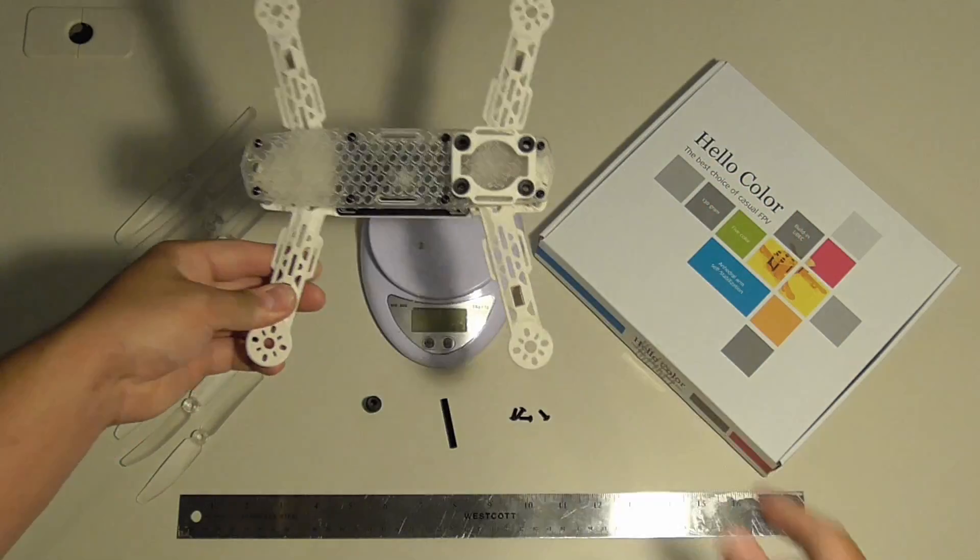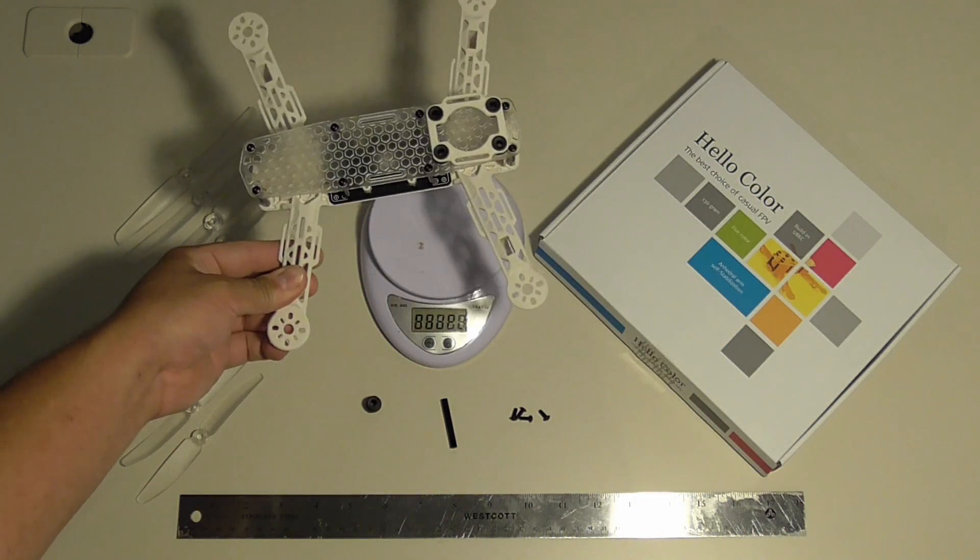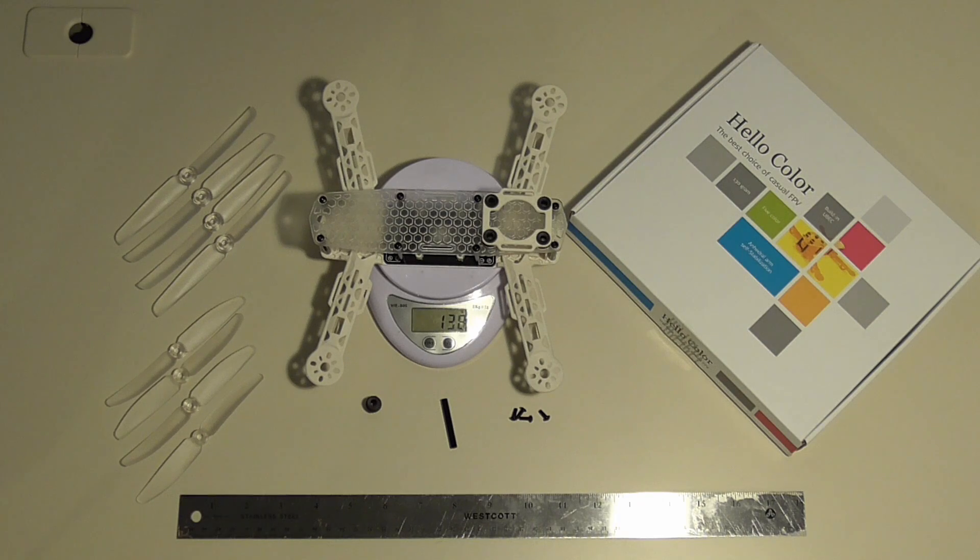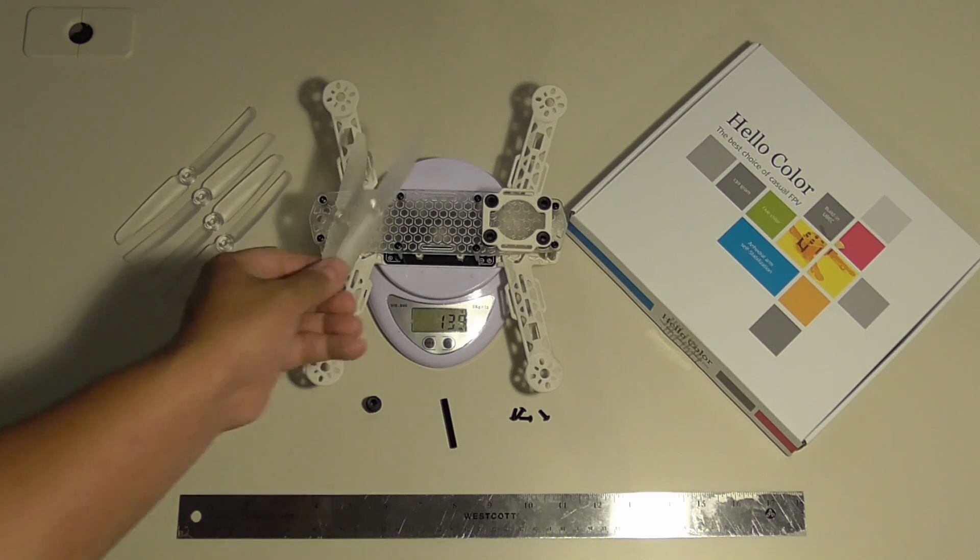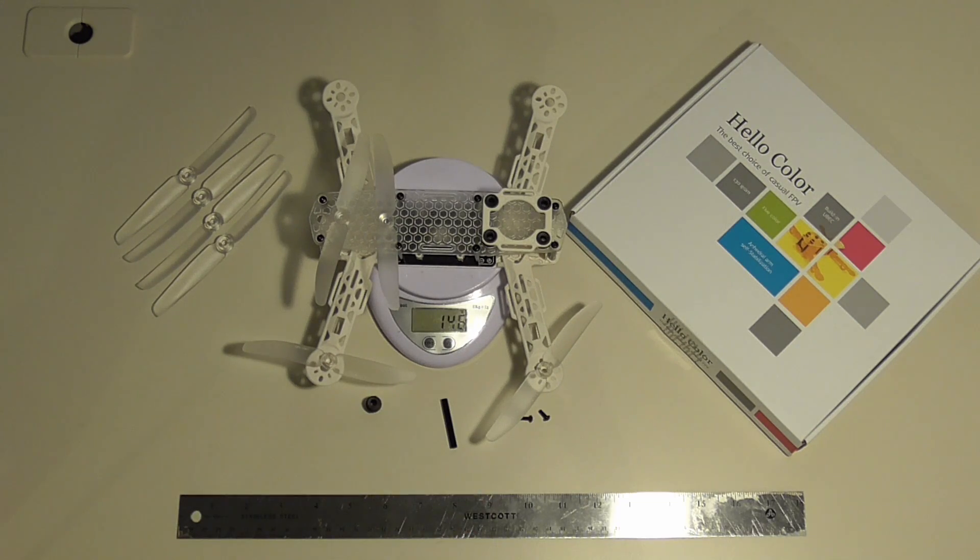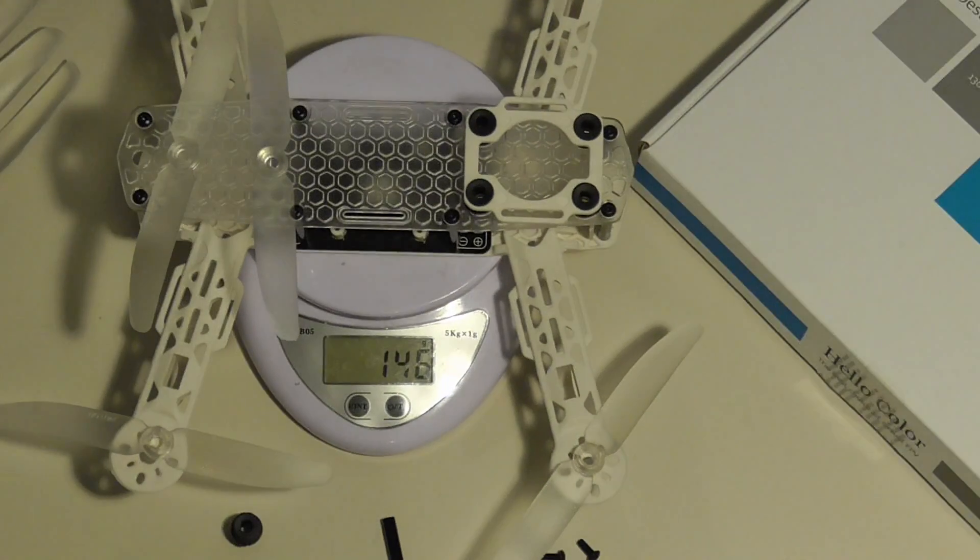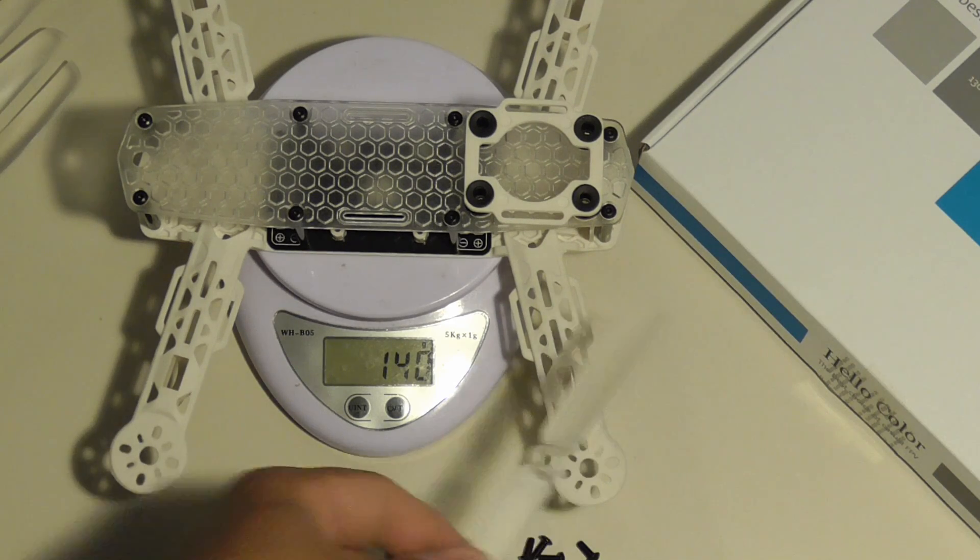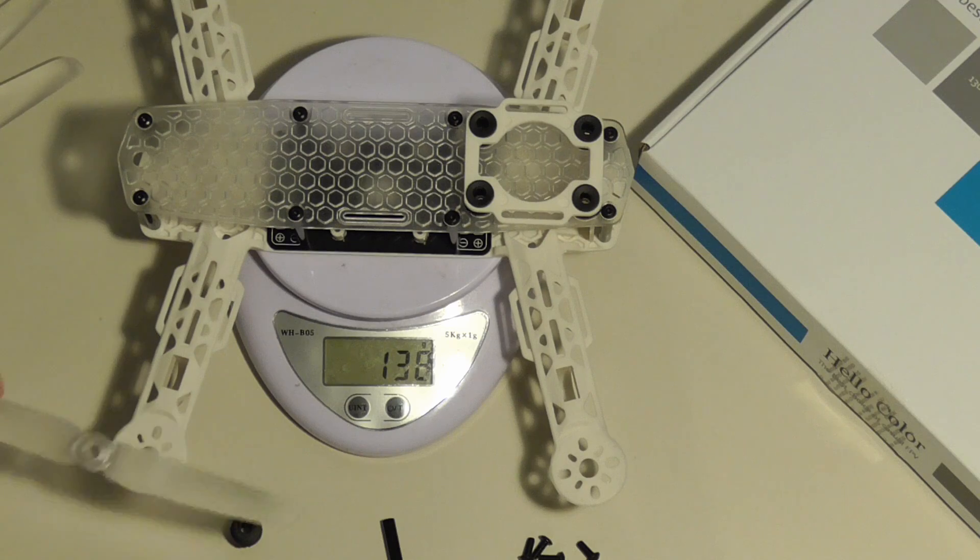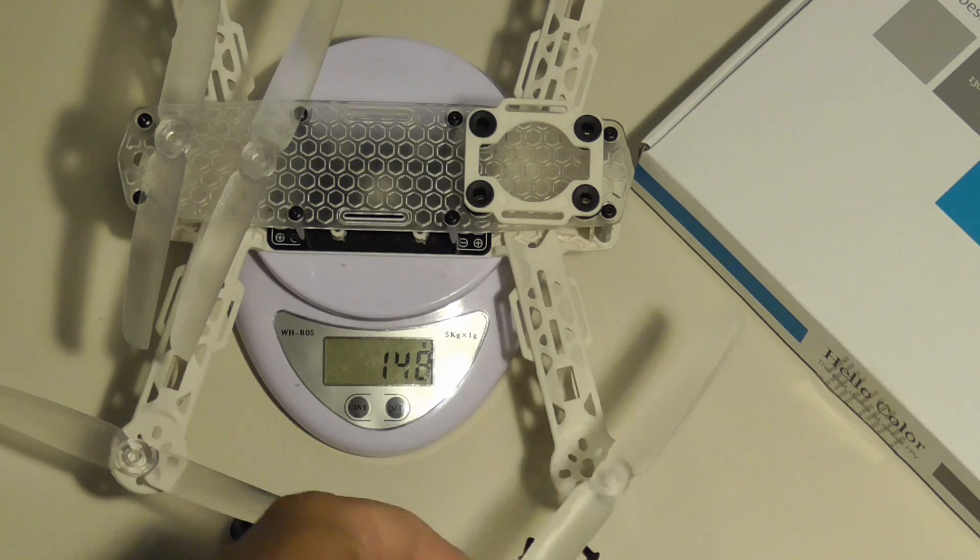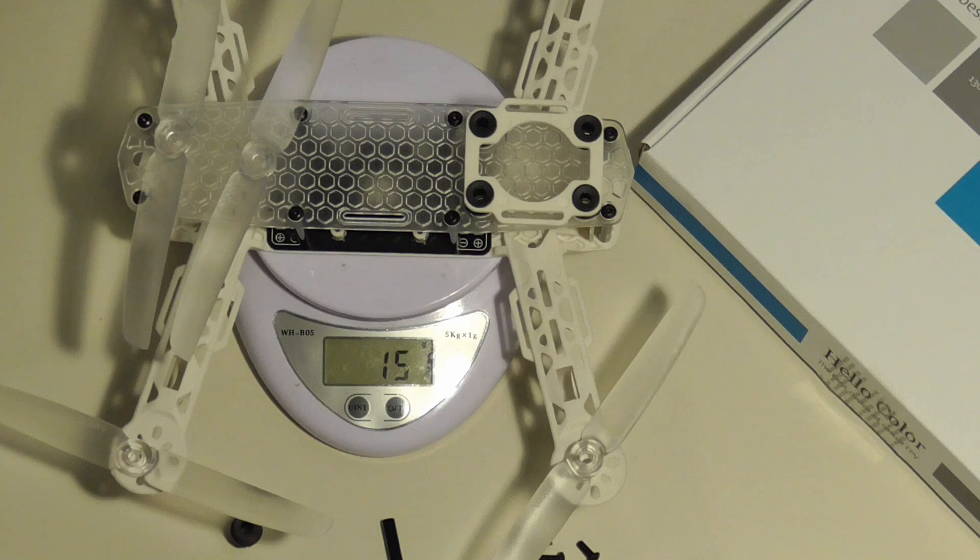All up weight, with the power distribution board, will be 138 grams. With the 5 inch props, your weight increases to 146 grams. With the 6 inch props installed, your weight goes up to 151 grams.